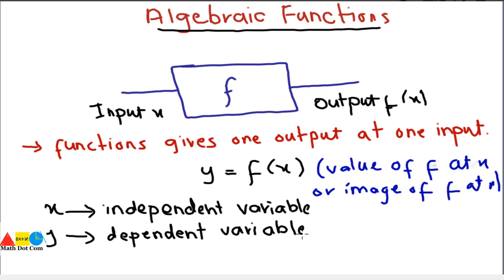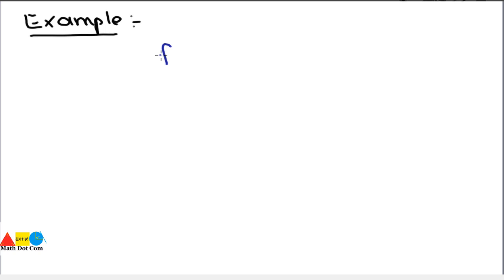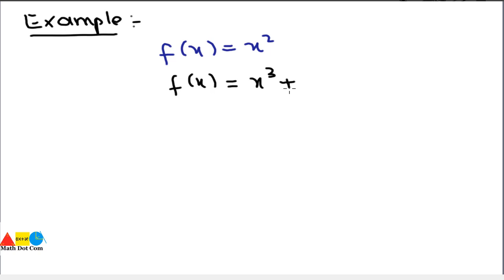Let's have an example to see how algebraic functions differ from ordered pairs. Given the function f(x) = x², we are evaluating f(x) at the value of x. Unlike ordered pairs where we already have the values of x and y, this is a general function where we have to find the values of x and y — that is, we have to evaluate this function.